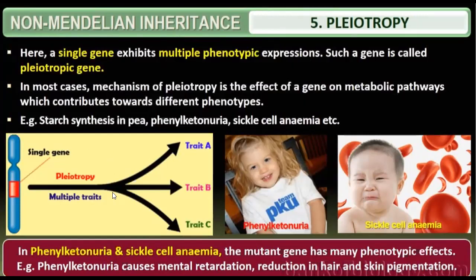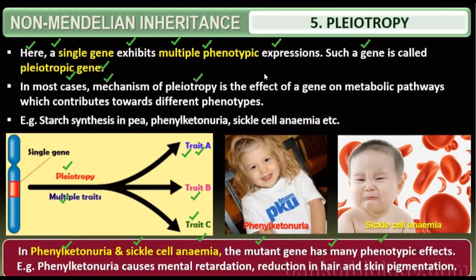In phenylketonuria and sickle cell anemia, the mutant gene has many phenotypic effects — one gene is mutated and it affects many characteristics. A single gene that exhibits multiple phenotypic expressions is called a pleiotropic gene. In most cases, the mechanism of pleiotropy involves the effect of a gene on metabolic pathways, which contributes to different phenotypes.